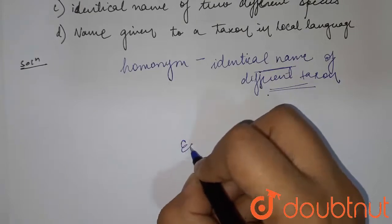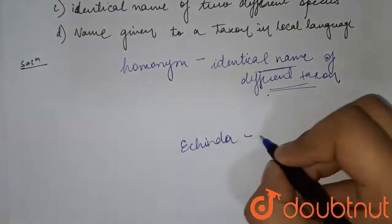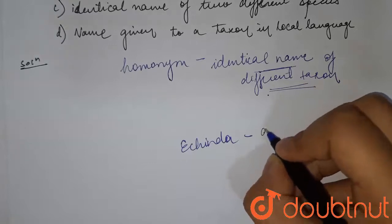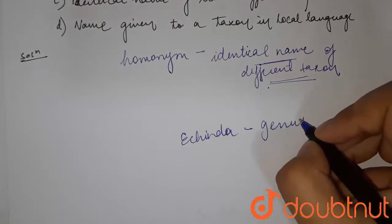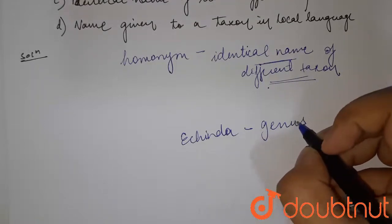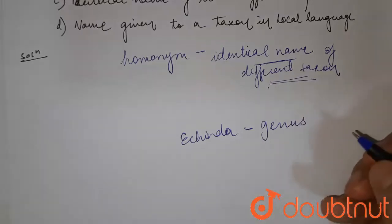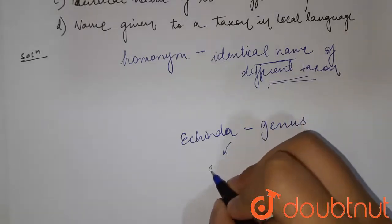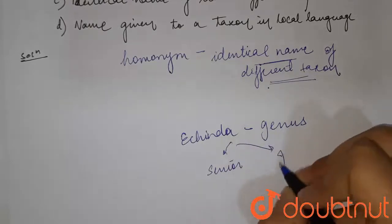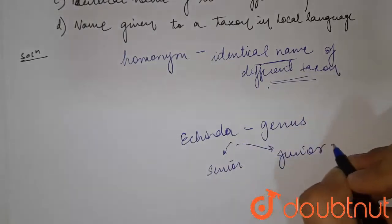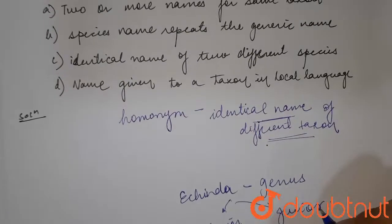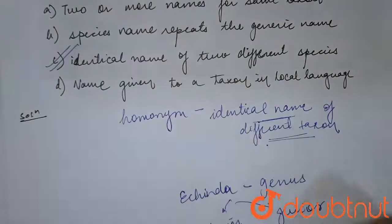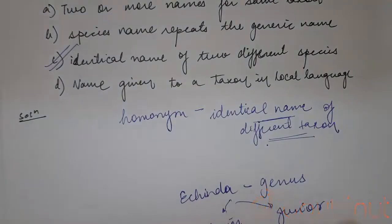Ekinda is the name used for the genus. The scientist Forster used this as a priority — the senior homonym — and the later scientist used it as the junior homonym. So the answer to the question is: identical name of two different species or taxa — option C.